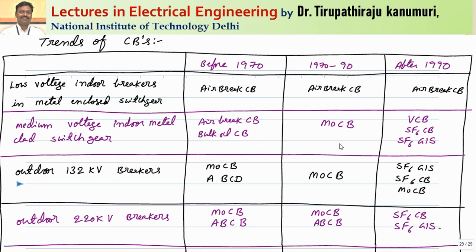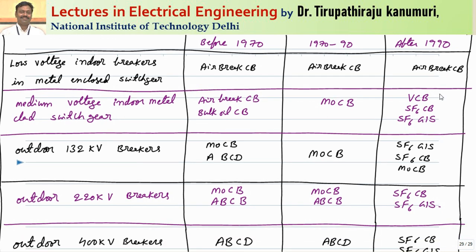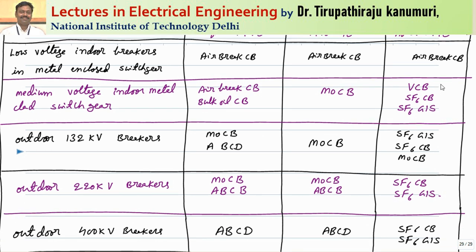What are the current trends? Trends are divided into three phases: before 1970s, between 1970 and 1990, and after 1990. For low voltage indoor metal-enclosed breakers, air brake circuit breakers were used before and are still used today — including the miniature circuit breakers in households. For medium voltage indoor metal clad switchyards, previously air brake or bulk oil circuit breakers were used, then replaced by minimum oil, and nowadays either vacuum circuit breakers, SF6 circuit breakers, or SF6 gas insulated substations are used. The current trend is only vacuum or SF6.